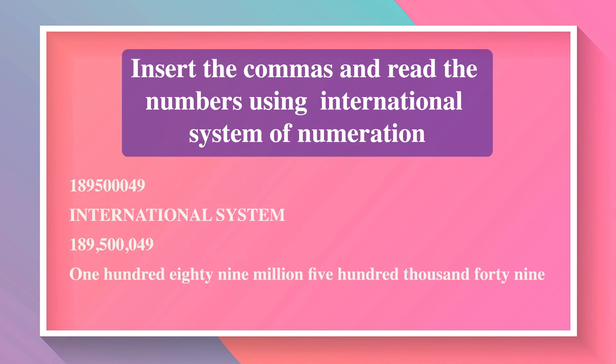Insert the commas and read the same number using the international system of numeration. We put commas from the right as 3, 3, 3. So we write it as 189,500,049. '189' represents millions and is read as 189 million. '500' represents the period thousands and is read as 500,000 (five hundred thousand). '049' represents the period ones, read as 49. So this number is read as 189,500,049.